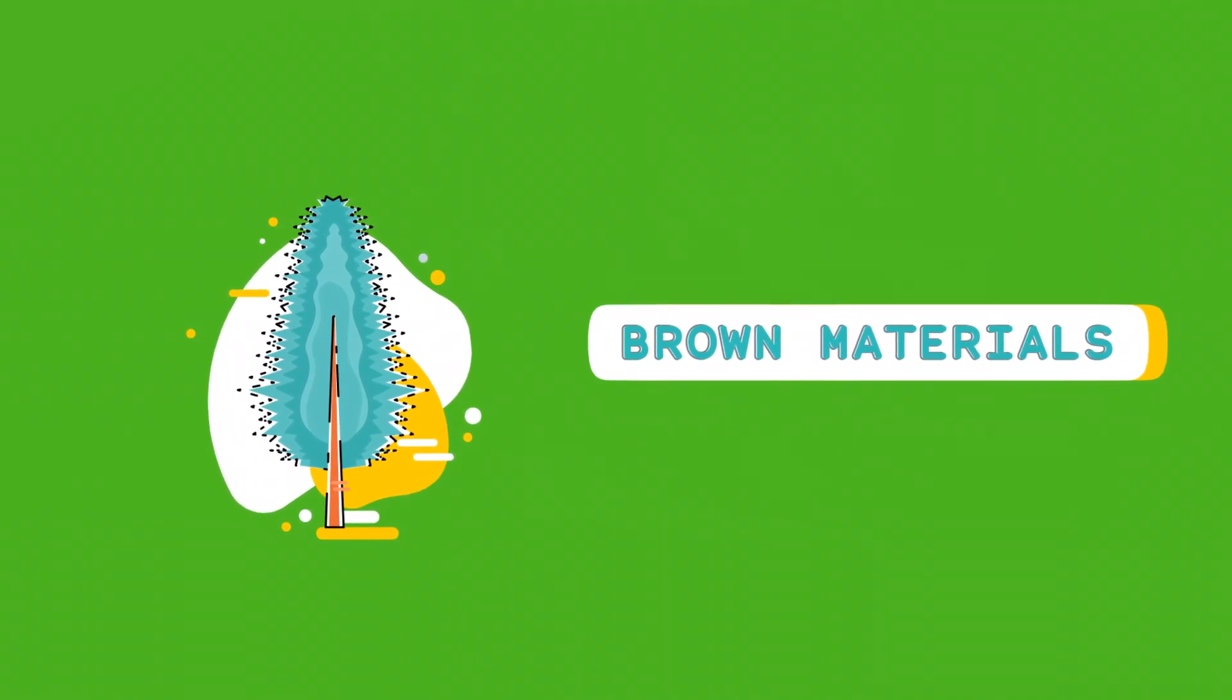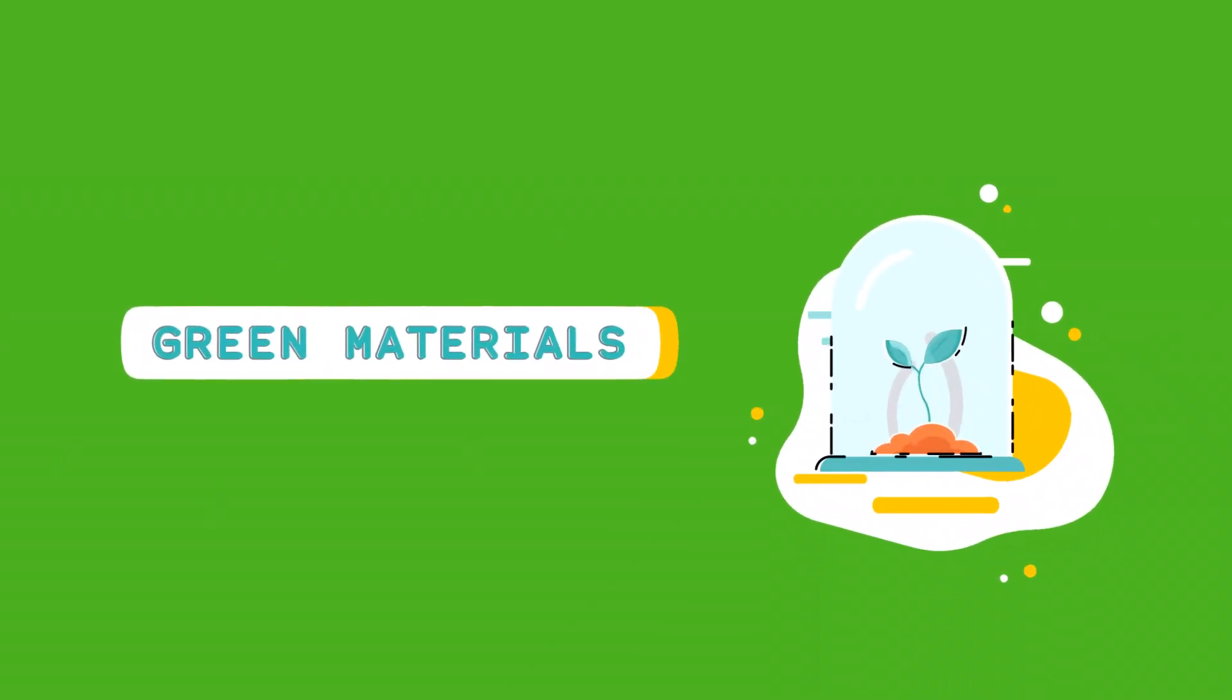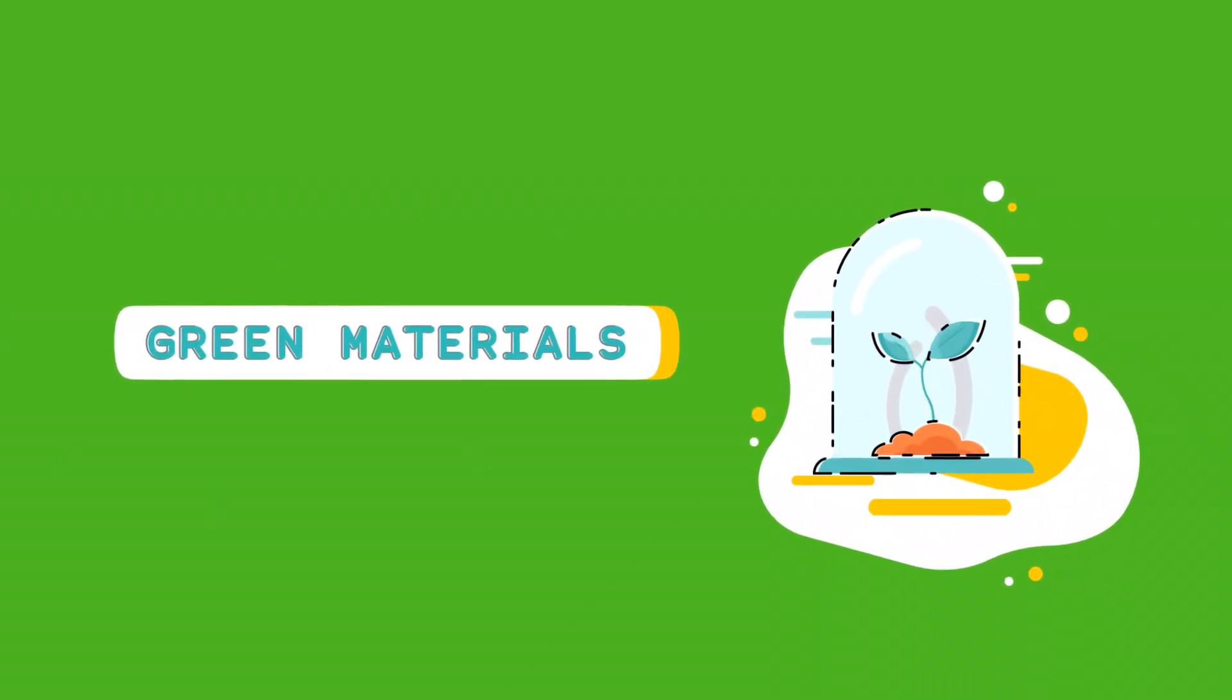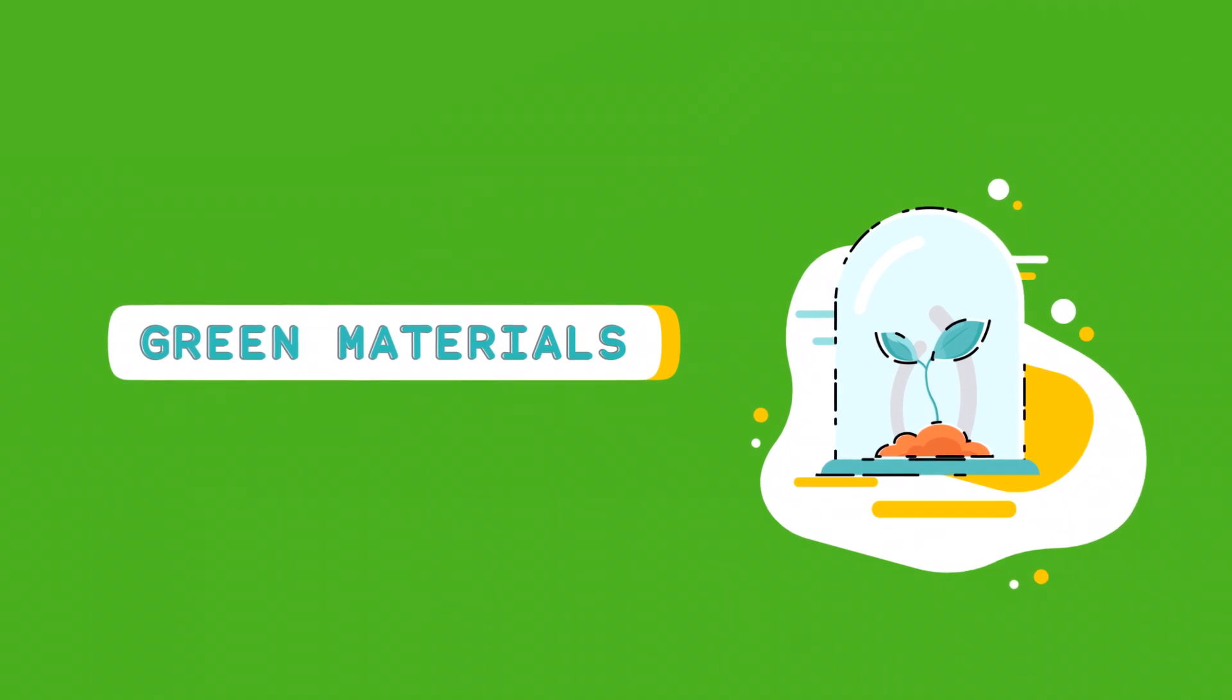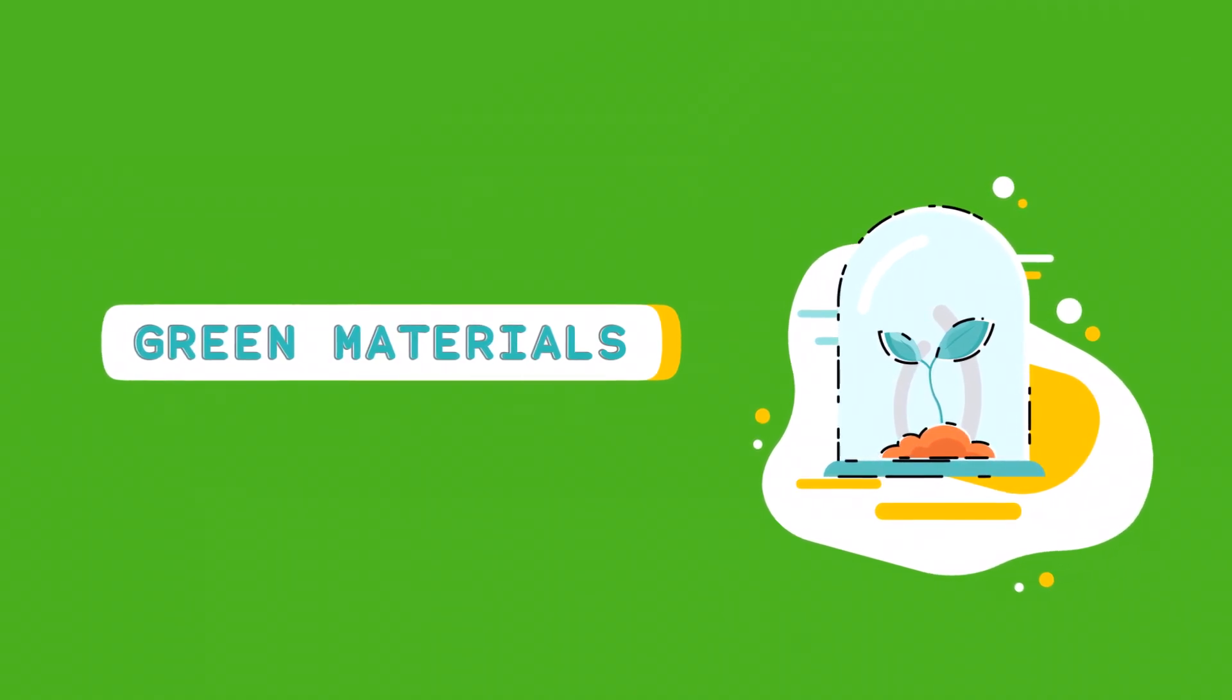Green materials include kitchen scraps, grass clippings, and coffee grounds. They provide nitrogen and moisture.